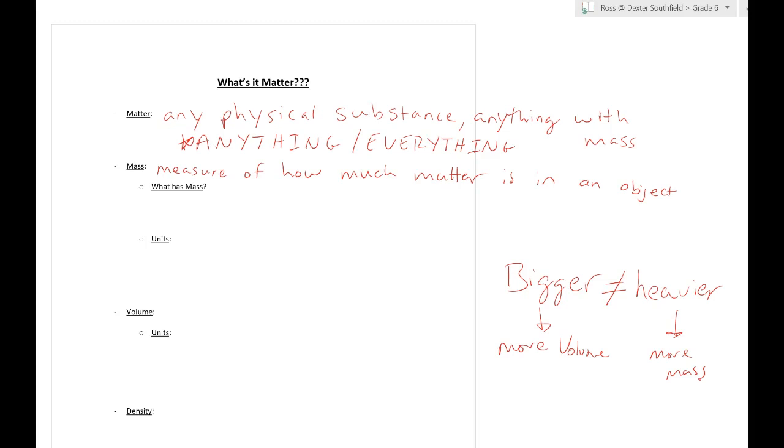Mass is the measure of how much matter is in an object. When we're thinking of any object, we need to think about the little tiny molecules that make it up. Essentially mass is like a count of how many little molecules there are in it. You're never going to measure the mass of a pencil by counting the number of molecules.